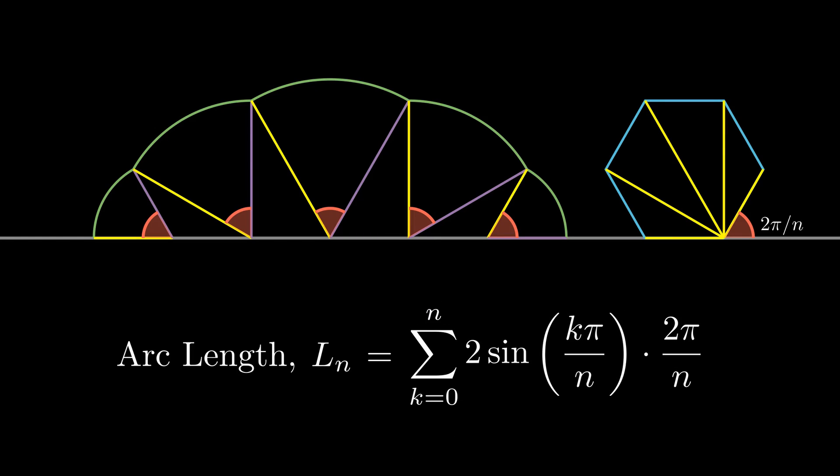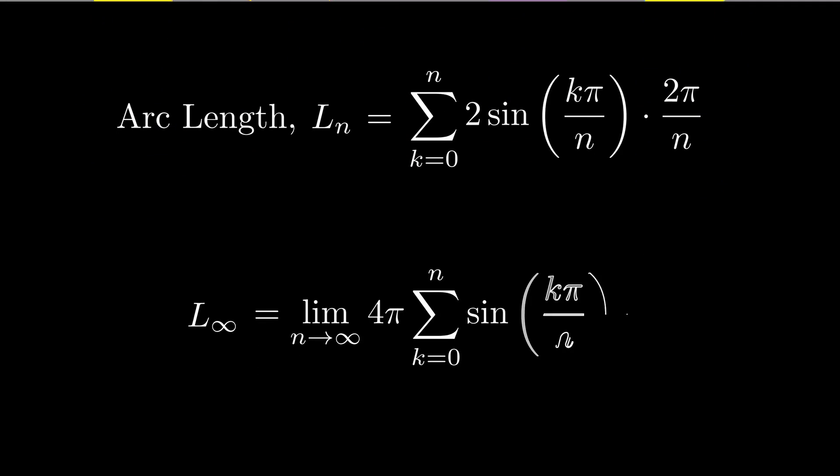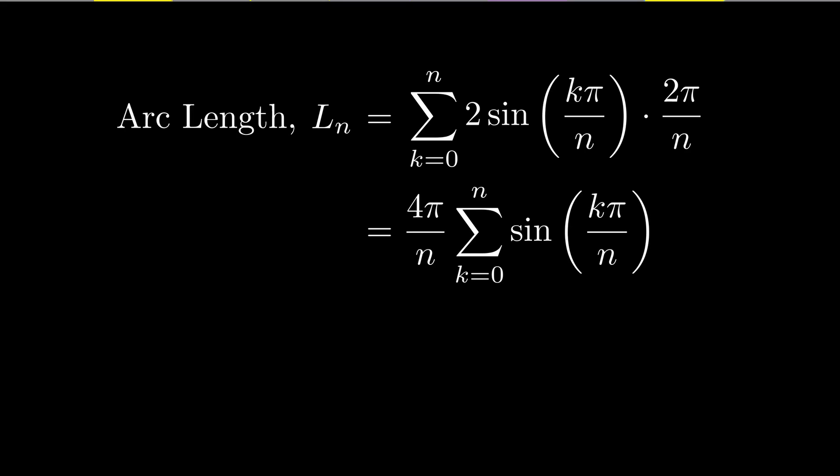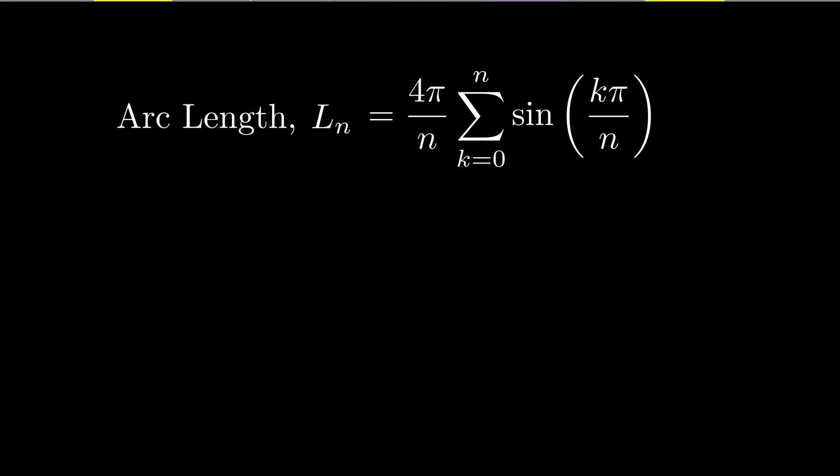To find the arc length of a cycloid, we need to evaluate this sum as n tends to infinity. There are multiple beautiful ways to do this. One method is to note that the sum at infinity equals the integral of sin(πx) from 0 to 1. But as we are actively avoiding calculus in this series and seeing the arc length from a historical standpoint, let's go via a more direct route that was available to the 17th century mathematicians.